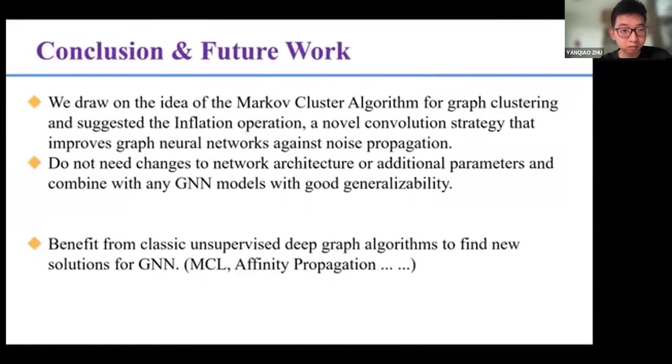Finally, I will summarize the main contribution of the work. We analyzed the limitations of the graph neural networks training by regarding the feature propagation process of GNN as a Markov chain. We draw on the idea of the Markov cluster algorithm for graph clustering and suggested the inflation operation, a novel convolution strategy that improves graph neural networks against noise propagation. The proposed inflation layers ensure that the representation of nodes after deep graph neural networks processing can still remain distinguishable clearly. Inflation operation does not need any changes to the network architecture or additional parameters, and it could be used in any graph neural network models with good generalizability. For future work, we think it is important to exploit the inspiration for graph neural networks from classic graph learning algorithms such as AP and MCL.